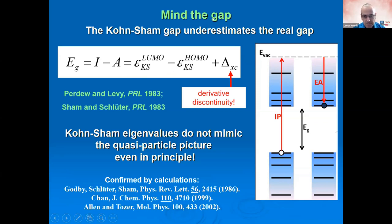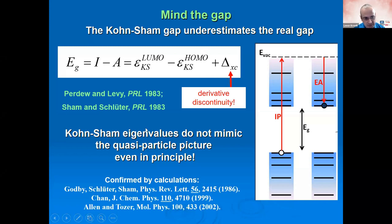One failure is the so-called band gap problem. The Kohn-Sham gap — the difference between the highest occupied and lowest unoccupied orbital energies — is not the same as the fundamental gap (the difference between ionization potential and electron affinity), even with the exact functional. This is due to the derivative discontinuity: the potential jumps by a constant as we cross an integer number of particles, so the Kohn-Sham eigenvalue picture doesn't mimic the quasi-particle picture even in principle.